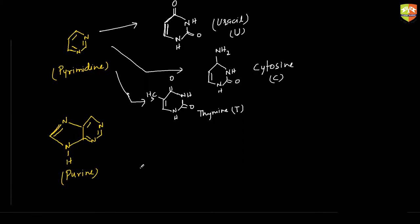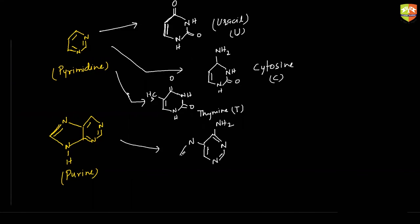For purines, there are two bases — adenine and guanine. For adenine, draw the fused ring structure with NH2 over here. The structure has double bond O here, double bond O here, double bond O here, and this carbon has NH2 attached with one nitrogen. We have hydrogen here and a double bond here — this structure is adenine, represented by A.